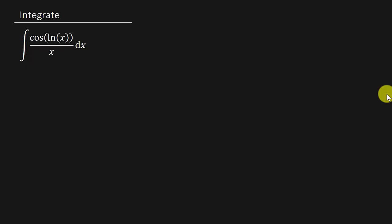Well, we got cosine of natural log x over x. This is a simple problem. It's just u substitution.